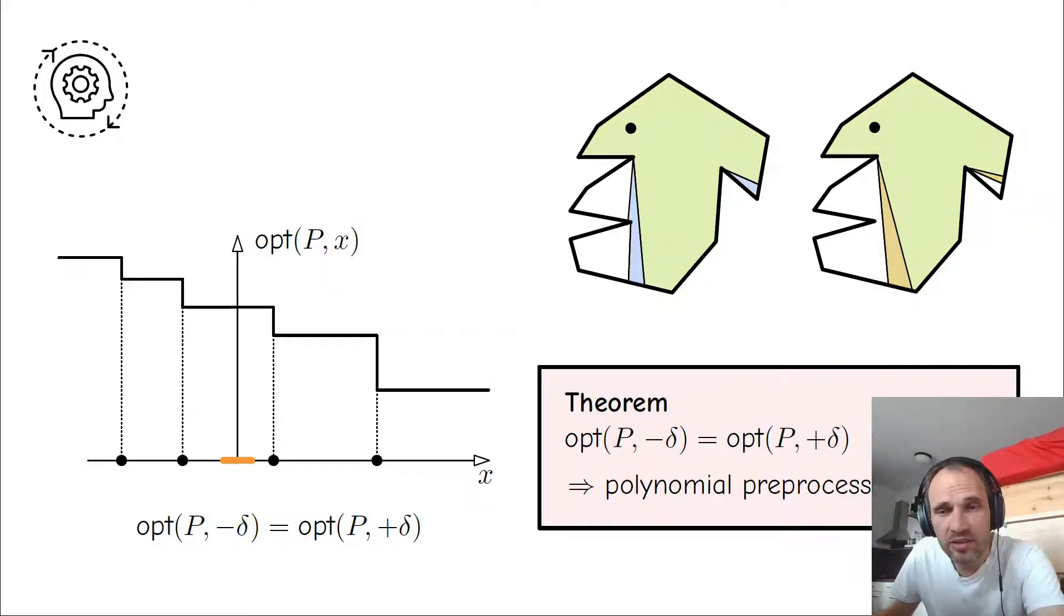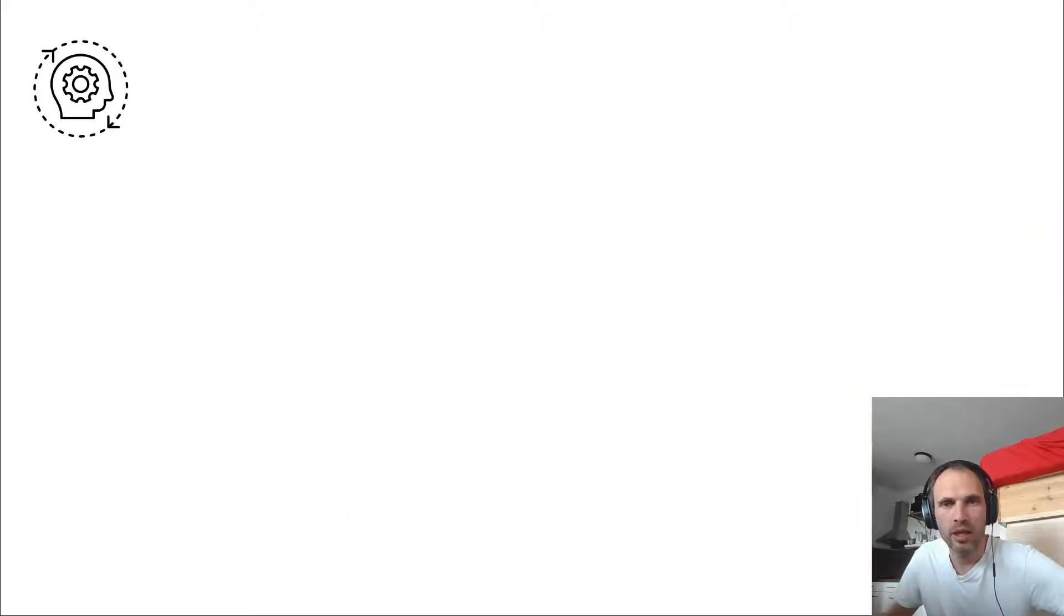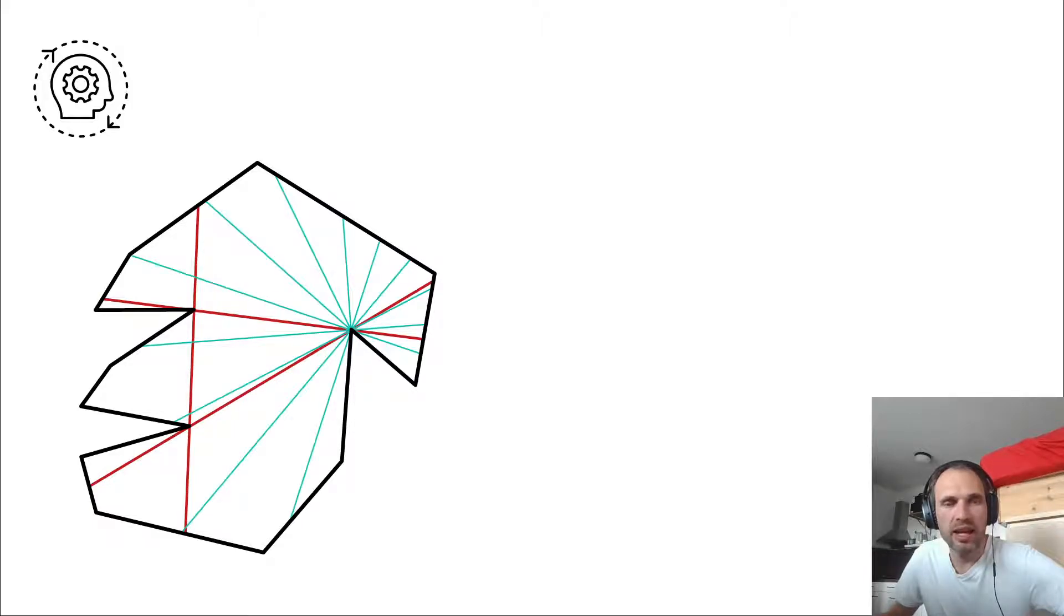But at least this gives us the first theoretical guarantees that doesn't use algebraic methods, which we know is impractical, but it gives us some algorithms that actually could be implemented. And we implemented this, but to make it fast, we also added up some more tricks.